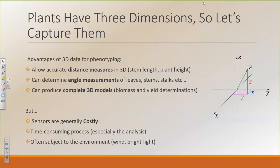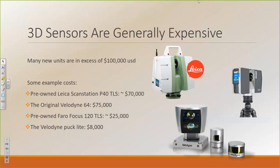However, the sensors that are traditionally used to do this are very costly. The data collection and especially the analysis process is very time-consuming. And a lot of these sensors are susceptible to different environmental conditions like wind or bright light. A lot of them are in excess of $100,000 if you want to buy them new. For example, a pre-owned Leica ScanStation 2 terrestrial laser scanner is about $70,000. The original Velodyne 64 was $75,000. A pre-owned Ferrofocus 120 terrestrial laser scanner costs about $25,000, and the Velodyne PUC Lite is $8,000.